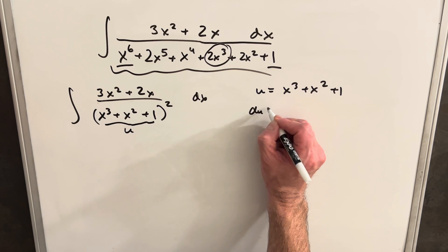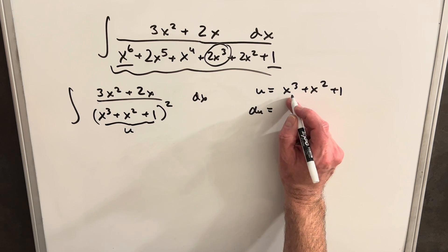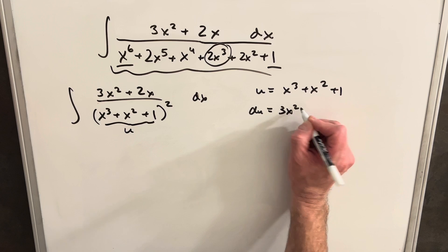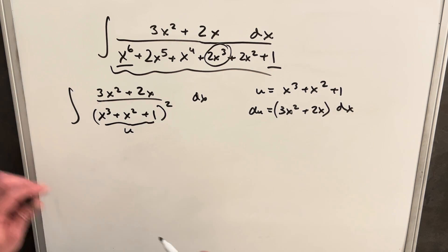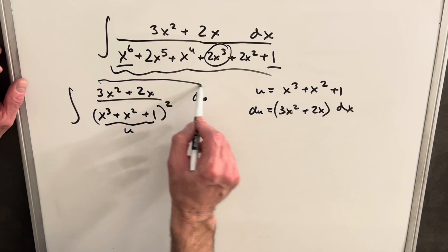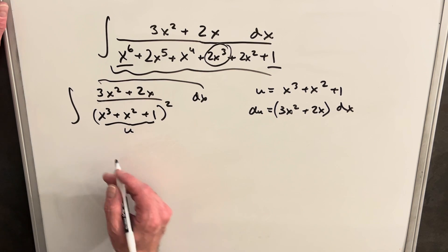then our du value is going to be 3x squared, taking the derivative, plus derivative of x squared is 2x. And then we notice that that's exactly what we have in the numerator. So we can make our substitution now.